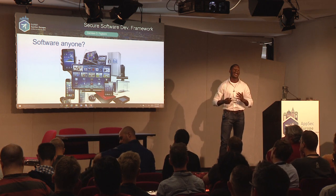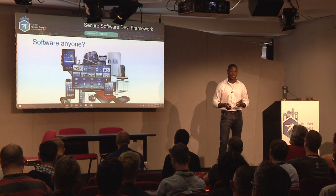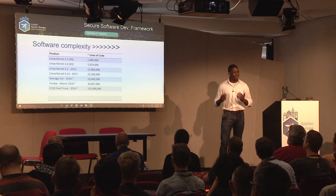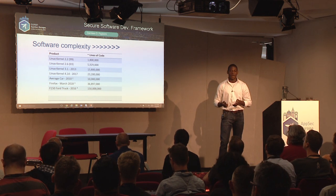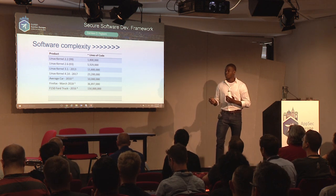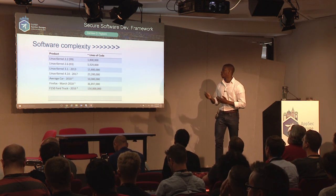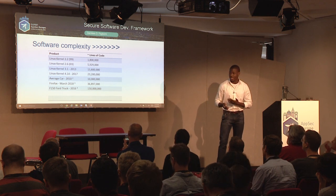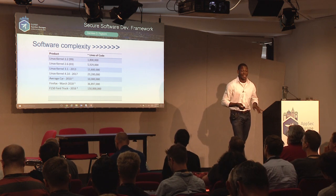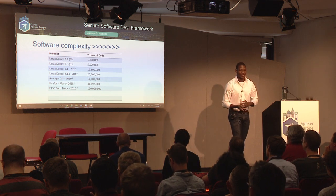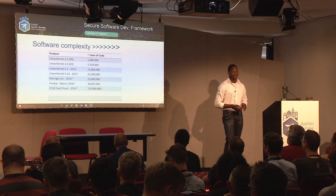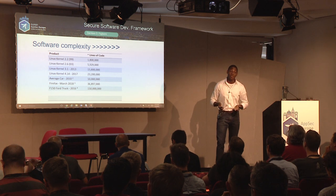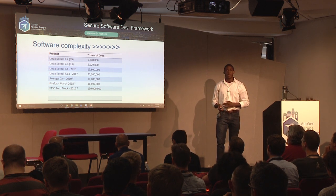Software everywhere - whether we go from our fridges to our cars, we've got software everywhere and we keep getting more lines of code. If you look at this chart, Linux is about 1.7 million lines of code, Firefox has 36 million plus lines of code. The average car in 2010 had about 10 million lines of code, and now a truck in 2016 has 150 million lines of code. My gosh, that just blows my mind.